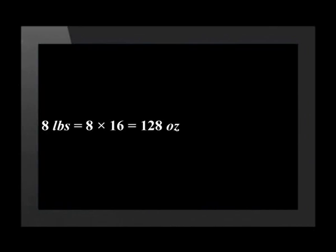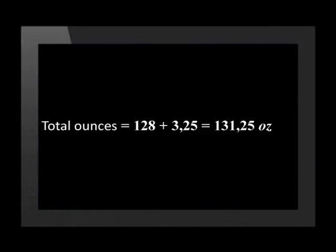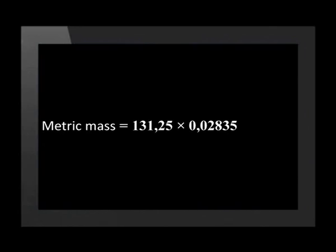Convert the pounds to ounces first. There are 16 ounces in a pound. Eight times 16 is 128 ounces. The total number of ounces is 131,25. Now to get to kilograms, we multiply 131,25 by 0,02835 kilograms, which is equal to 3,721 kilograms.